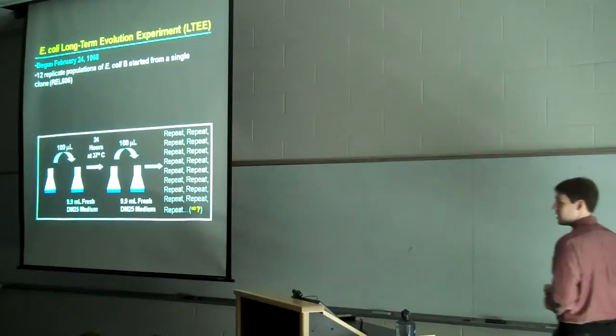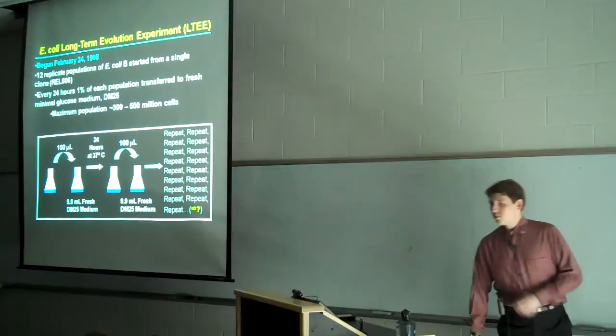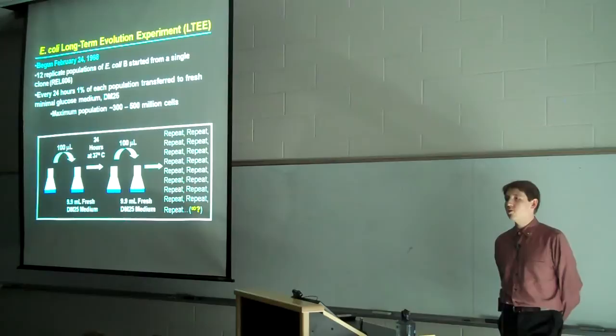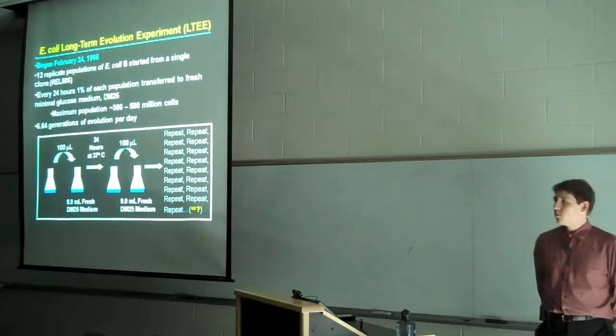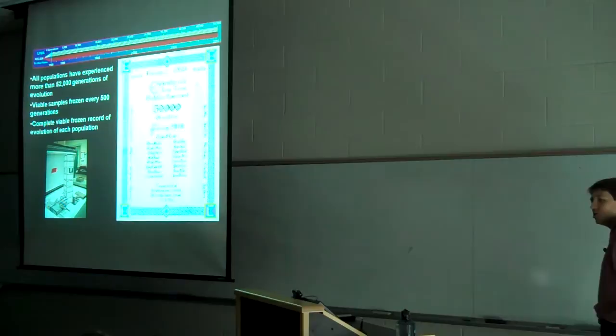Like the E. coli long-term evolution experiment, or LTEE, which Dr. Lenski began on February 24th of 1988, when he founded 12 populations of E. coli B from a single clone. Ever since, with some exceptions, every 24 hours, 1% of these populations has been transferred to a fresh minimal glucose medium, DM25, in which they attain a daily average maximum of 300 to 500 million cells. Under these conditions, the populations experience 6.64 generations of evolution a day. And at this pace, over the 23 years so far of the experiment, the populations have experienced more than 52,000 generations of evolution.